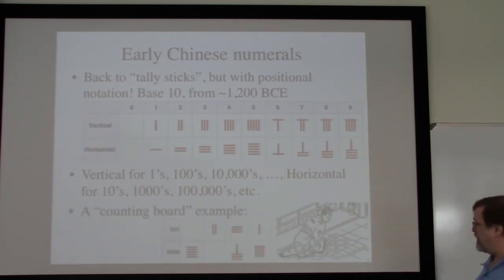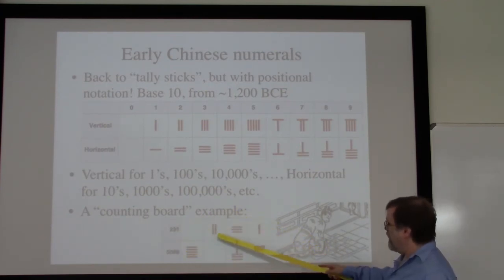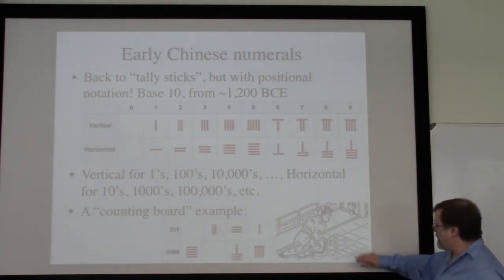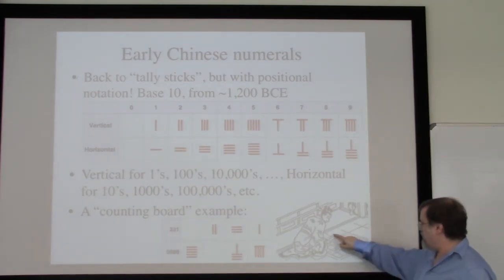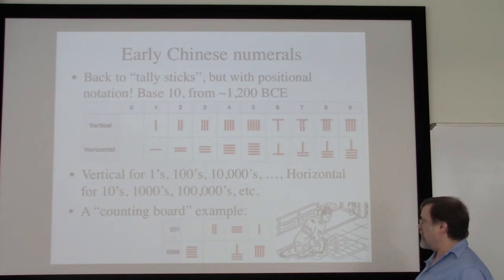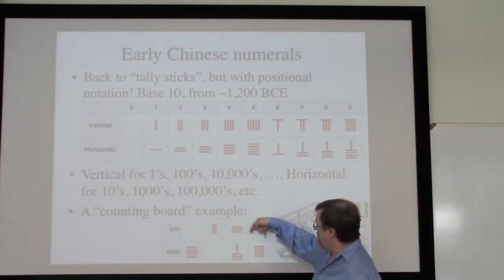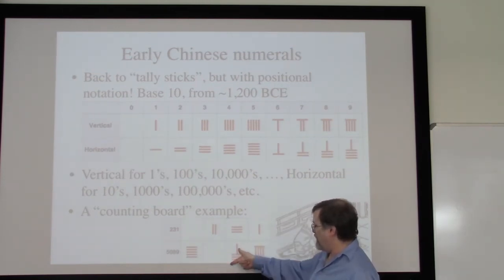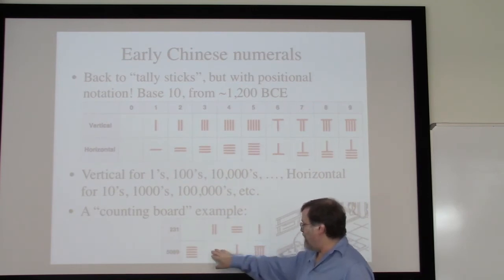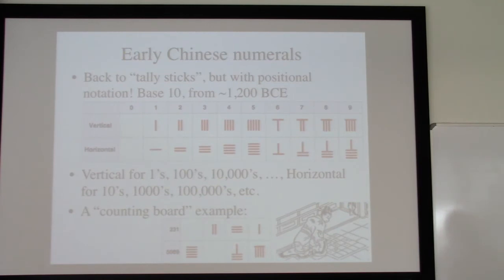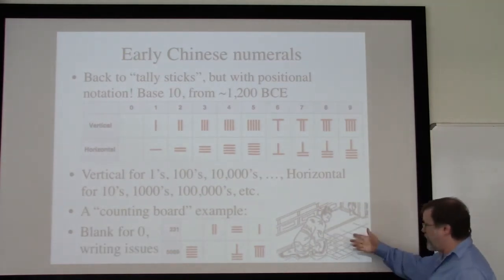At this time, 1200 BCE, they're using what we refer to as counting boards — a physical layout in which we keep numbers as we're trying to solve different kinds of math problems. This is a picture of a person using a counting board — actually a Japanese picture, but they imported these ideas as well. You can see the squares marked off with rods being used for keeping track of numbers. The vertical lines alternate with horizontal to indicate position. Here's the number 5089: vertical for the ones, horizontal for the tens, then a blank which essentially represents a zero, then horizontal for the 5,000.